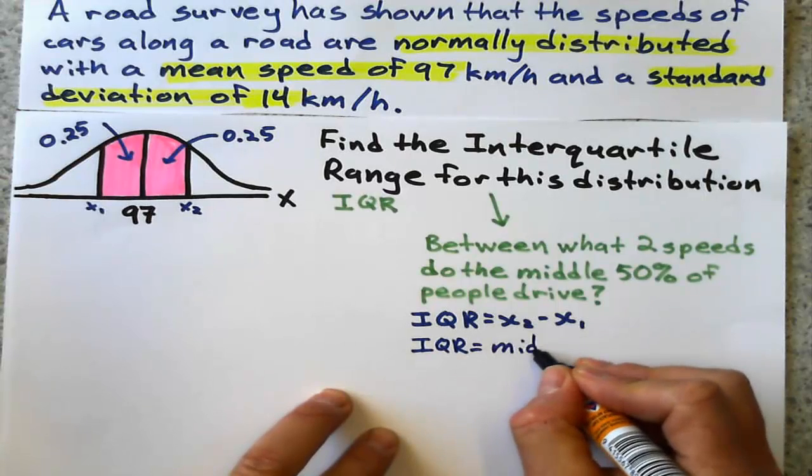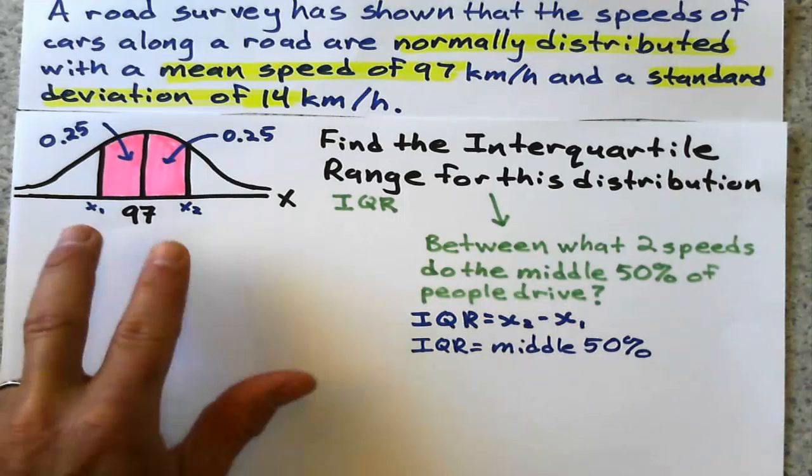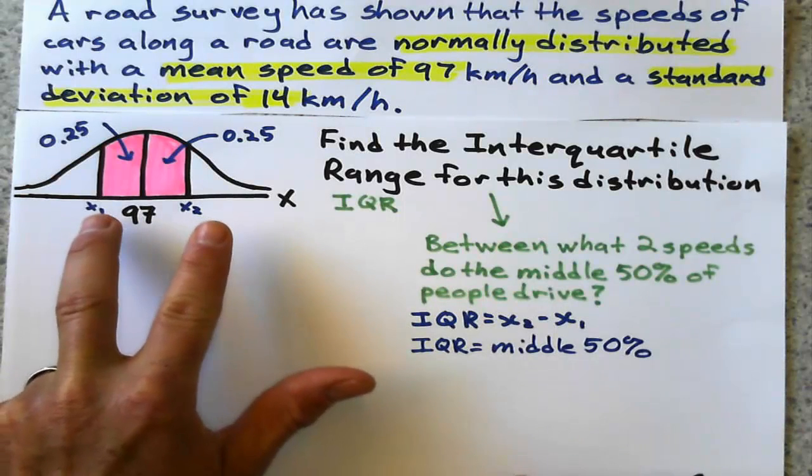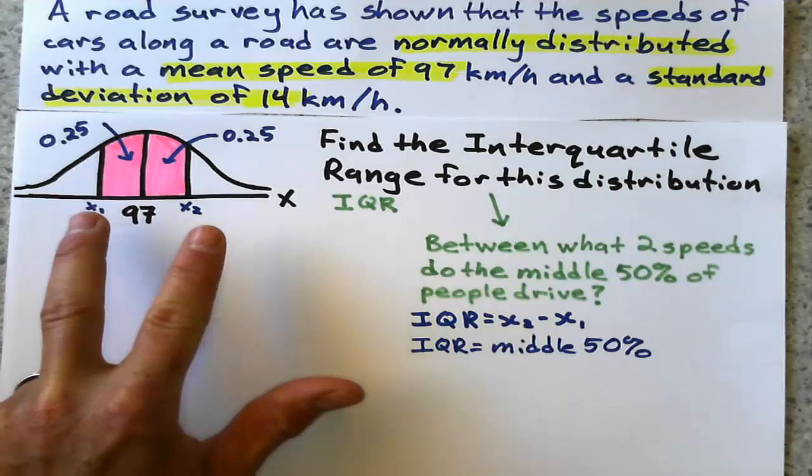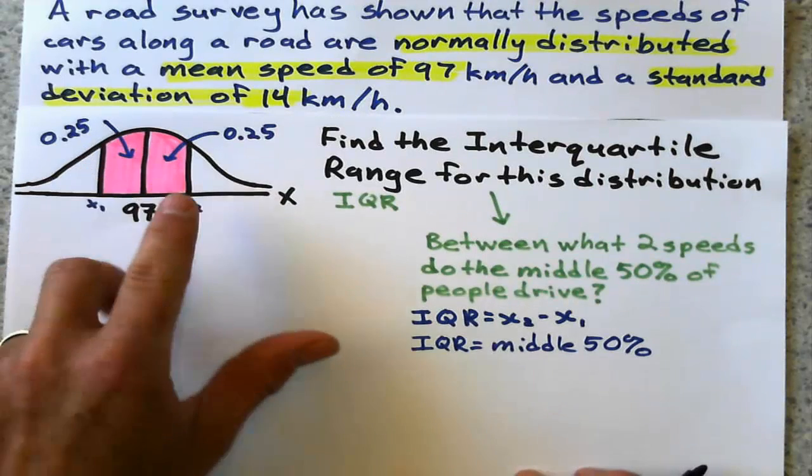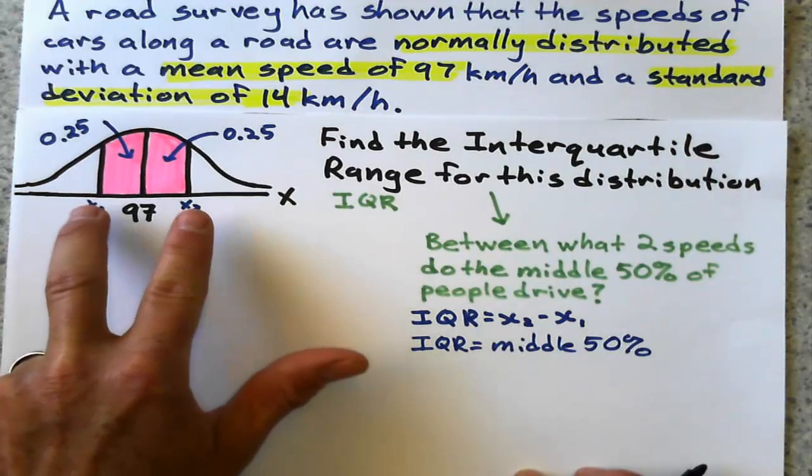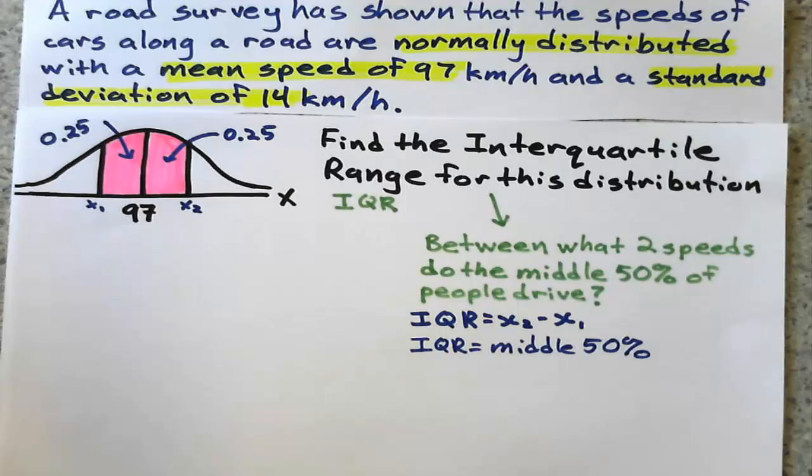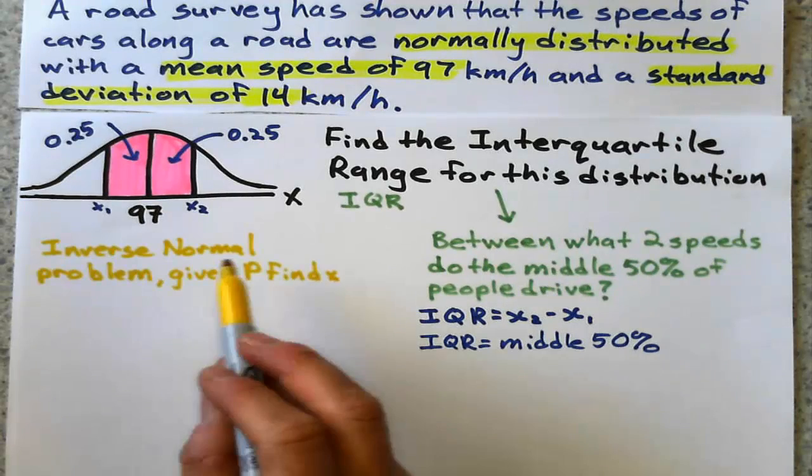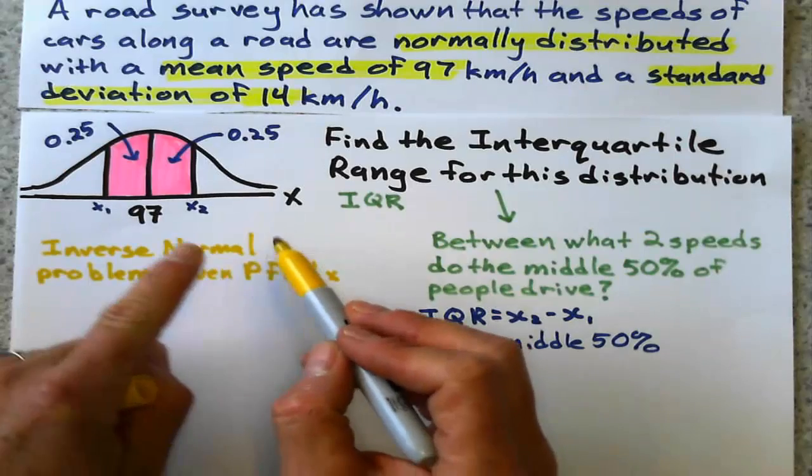This type of problem is what we call an inverse normal problem. Inverse normal means I'm given the probability and I have to find some values, some speed in this case. An inverse normal problem is when we're given the probability and we've got to find X.